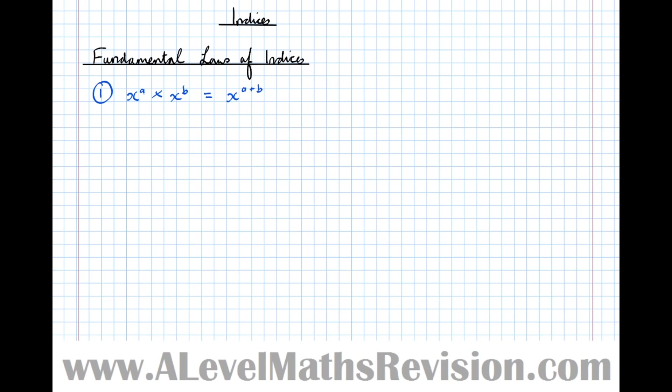I want to give a couple of examples of common misconceptions to do with this rule, because this rule only works when the numbers to which the indices are attached — in this case x — are the same. So annotating this: this only works because the base numbers are the same.